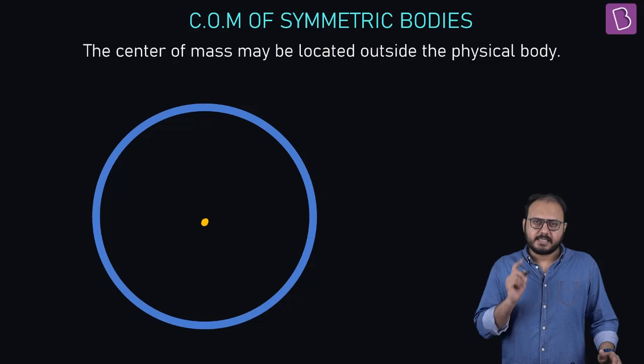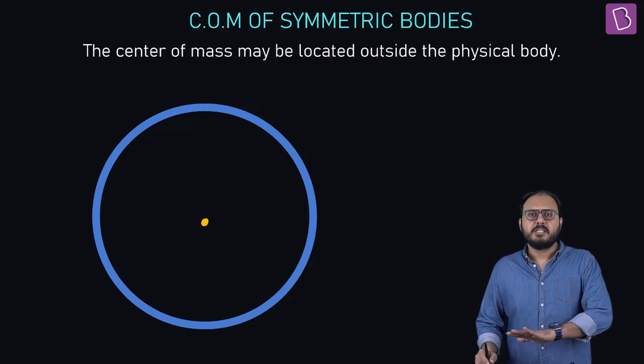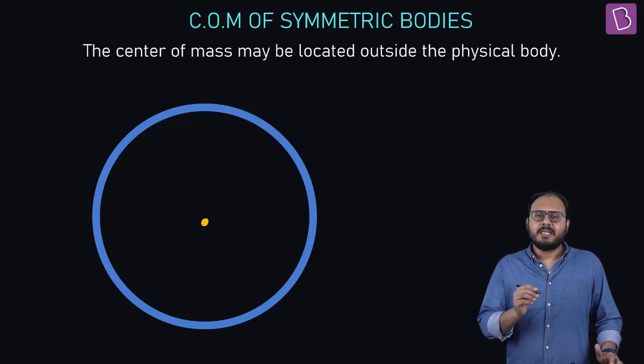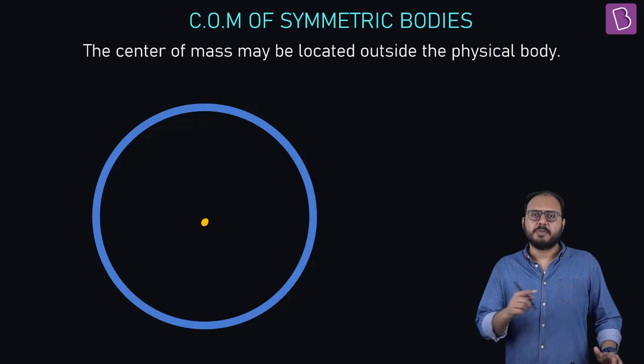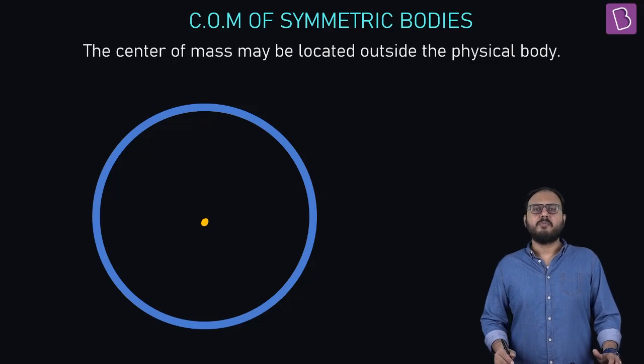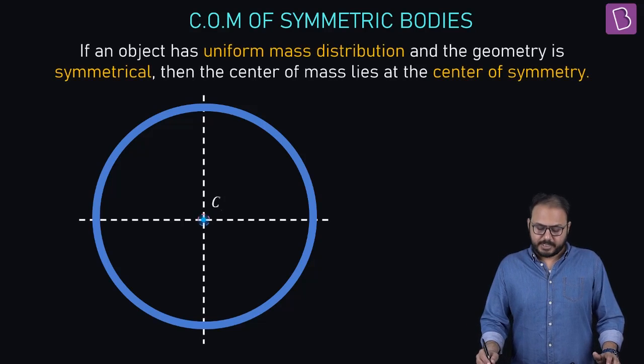First of all, yes, the center of mass can be located where there is no physical mass present. The entire mass of the ring is on the circumference. There is nothing at the center, but still the center of mass is at the center because if object has uniform mass distribution...